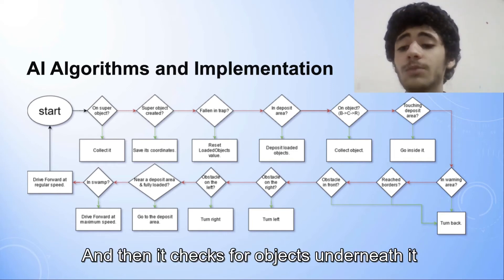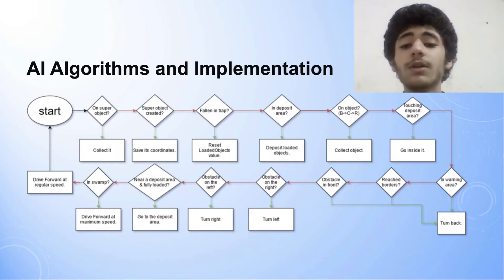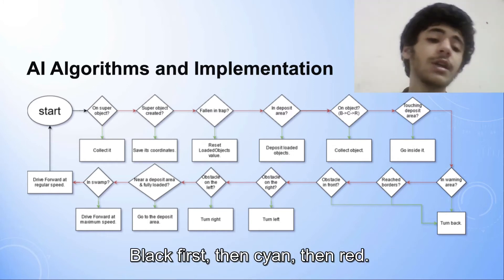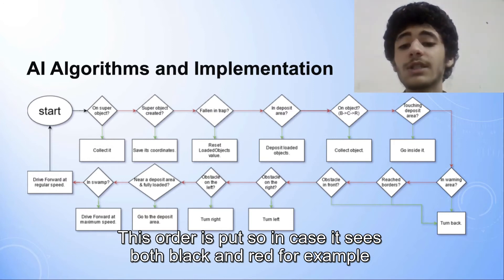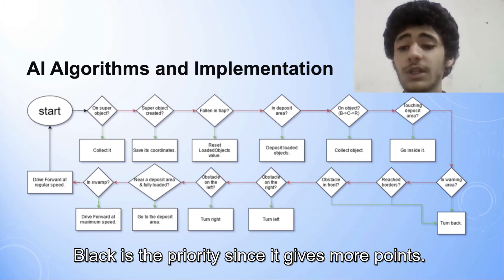Then it checks for objects underneath it, black first, then cyan, then red. This order is put so in case it sees both black and red, for example, black is the priority since it gives more points.